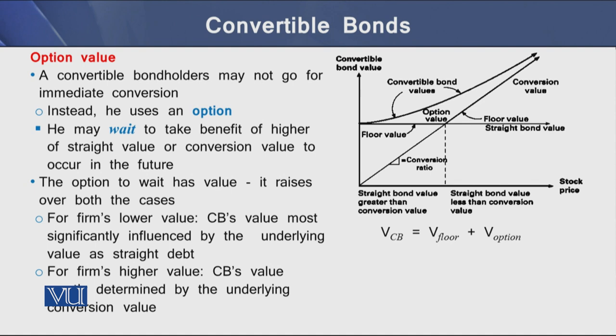The option to wait has a certain value, and this value rises in both cases. If the firm has a lower value, the convertible bond's value is more significantly influenced by the underlying straight bond value.